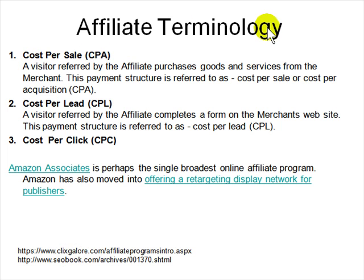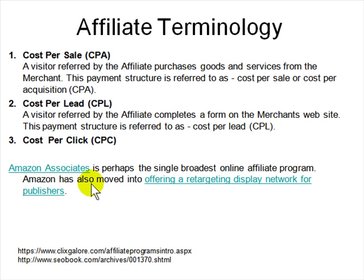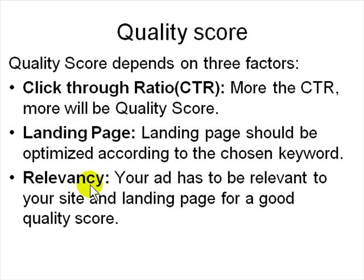Affiliate marketing terminology includes CPA (Cost Per Acquisition/Sale) — you get charged when you acquire a customer. CPL is Cost Per Lead — every time an affiliate refers a visitor to a website, they charge some money. There is also Cost Per Click. Amazon Associates is the largest affiliate program. Amazon also handles product logistics, which is different from Google. Amazon has many features that differ from Google.